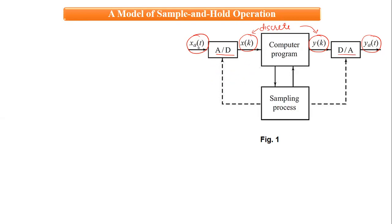Generally A-to-D and D-to-A conversion are two different processes, but they can be represented by a single device, which we call the sample and hold circuitry. The sampling process here — the conversion of analog to digital and then digital to analog — is a totally synchronized process. There shall not be any lag or lead between the two processes; they go simultaneously.